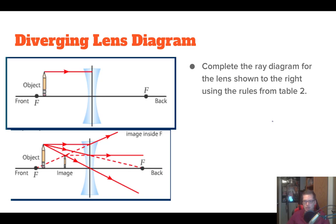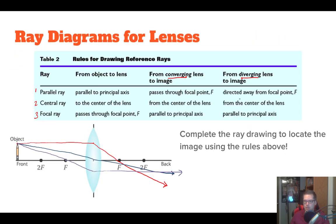Diverging lenses are also fairly complicated. We follow the same three rules, but the image is virtual and smaller. One ray comes in parallel, bounces off, and instead of passing through the focal point on the far side, it acts as if it came from the focal point on this end. The second one passes through the center and keeps going. The third passes through the lens as if it was going to go through the focal point, but gets bounced off parallel. To draw a diverging lens diagram, follow that third column of rules.